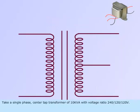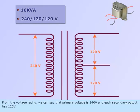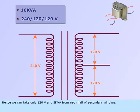Take a single-phase center tap transformer of 10 kVA with voltage ratio 240 by 120 by 120 volts. From the voltage reading, we can say that the primary voltage is 240 volts and each secondary output has 120 volts. Hence, we can take only 120 volts and 5 kVA from each half of secondary winding.